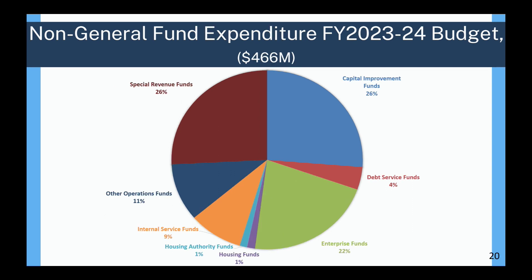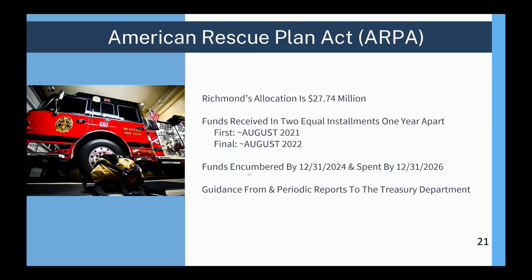The final pie chart is our non-general fund expenditure for fiscal year 2023-24, the same categories by type: capital improvement funds at 26%, special revenue funds at 26%, debt service funds at 4%, enterprise funds at 22%, other operation funds at 11%, internal service funds at 9%, and housing authority and housing funds both at 1%. I'll hand it over to Mubeen Cotter, the Deputy Director of Finance.